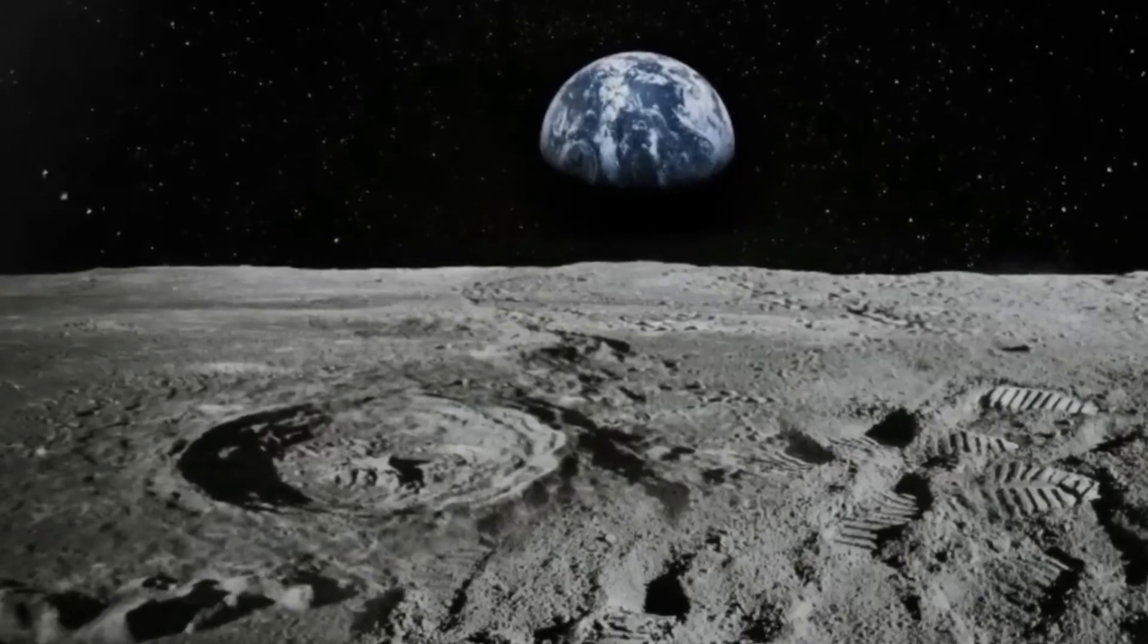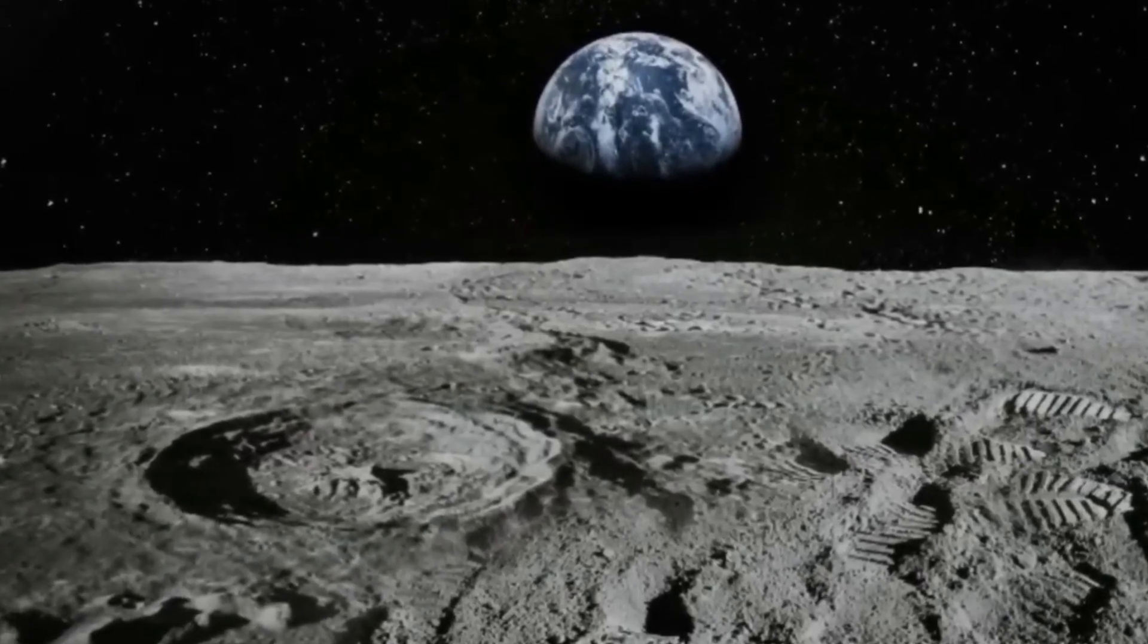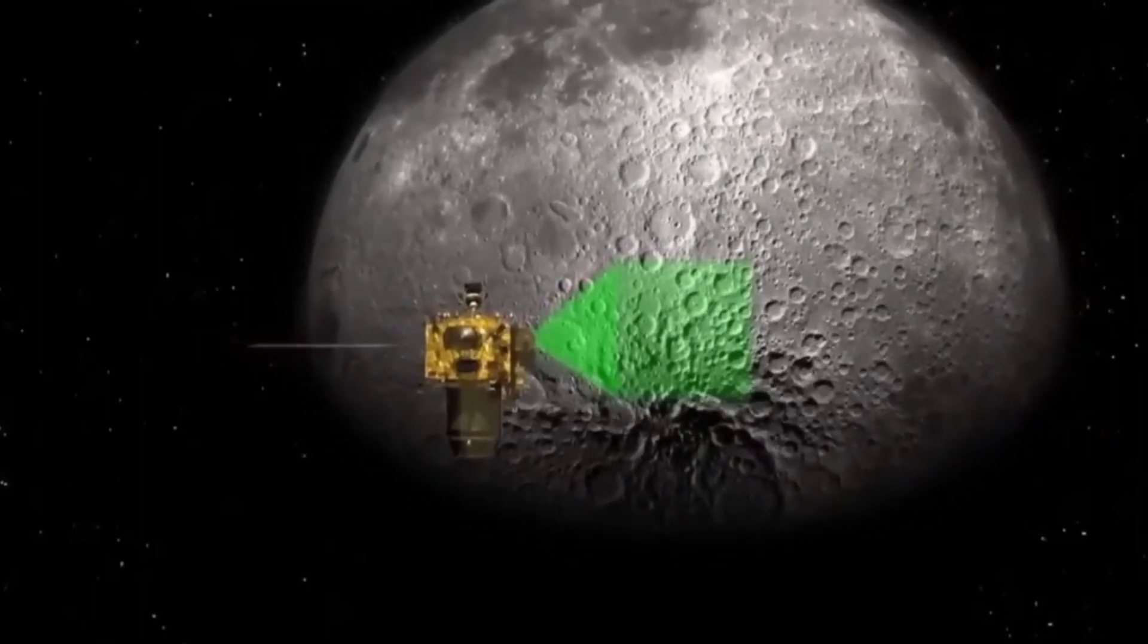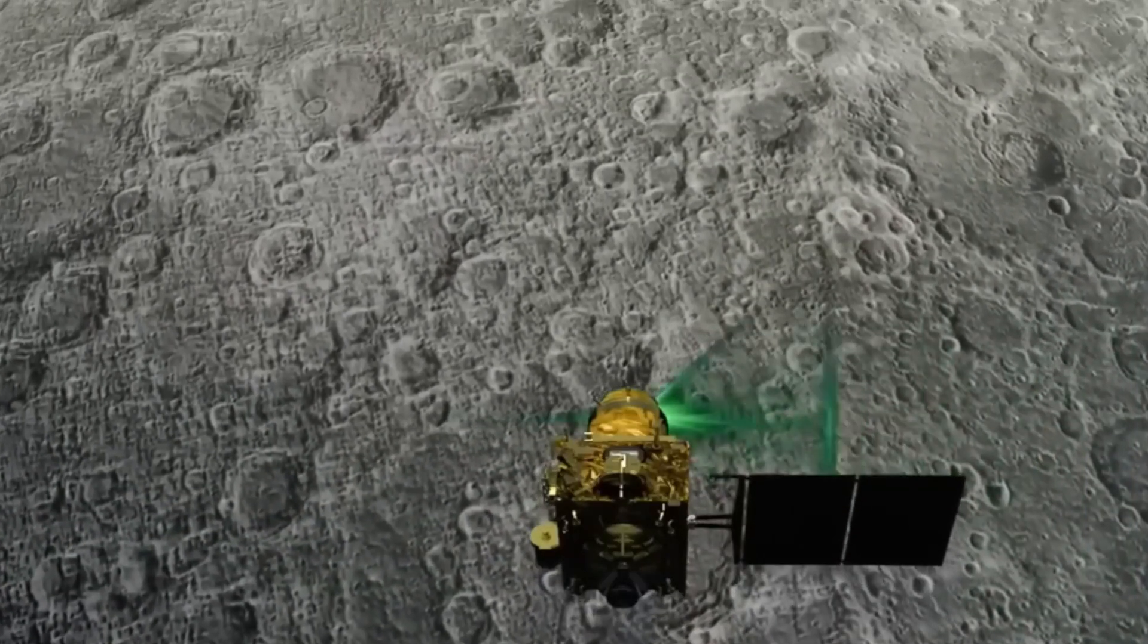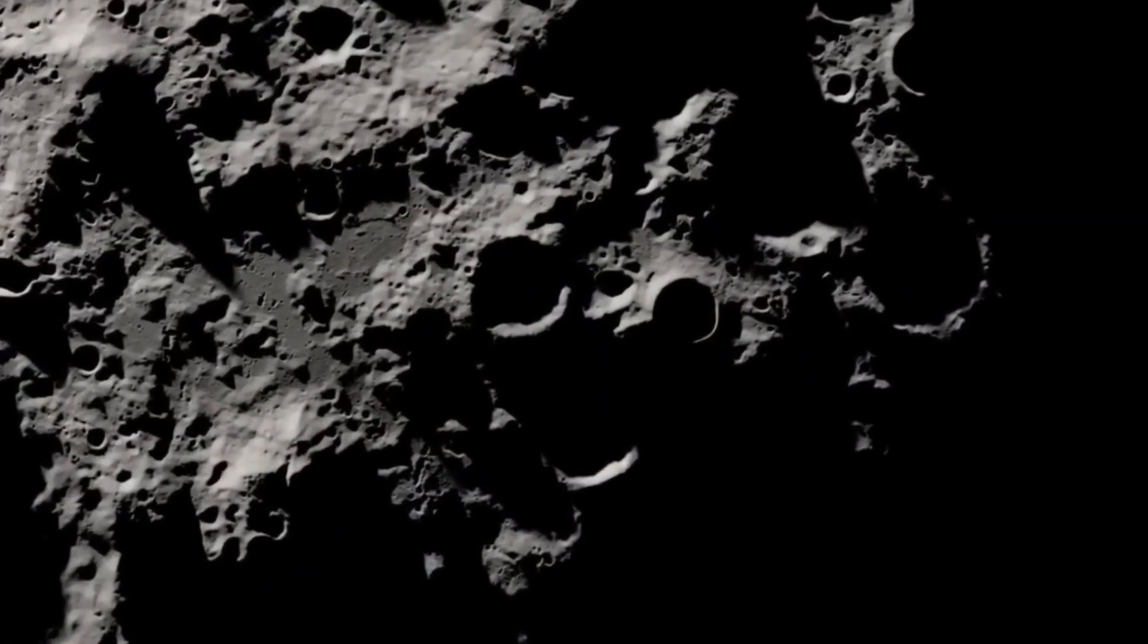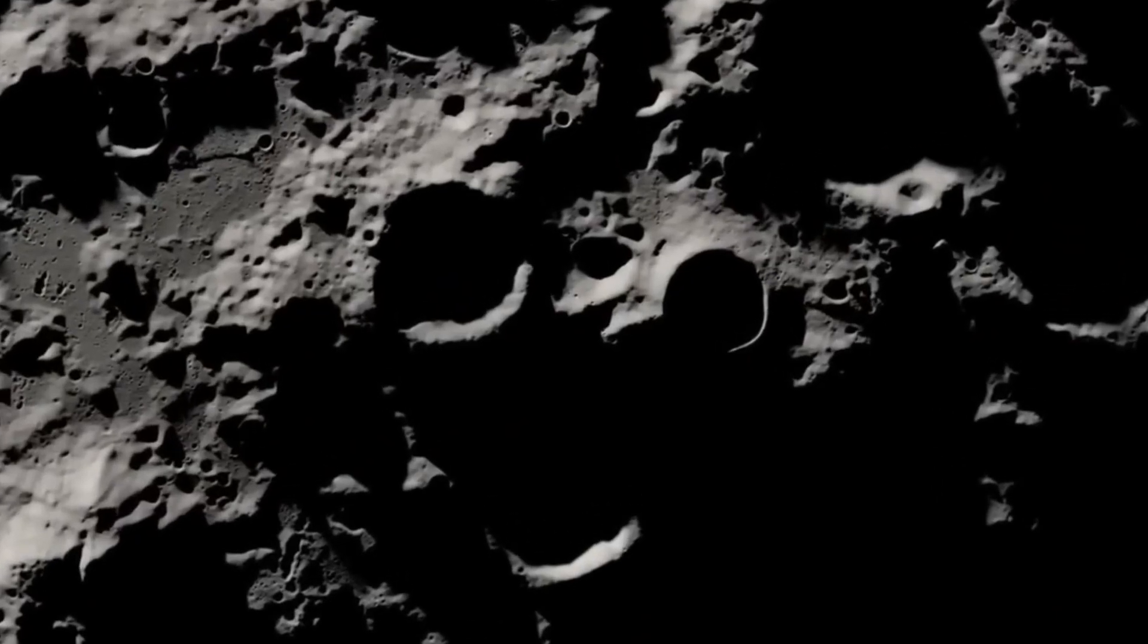Another challenge was the lack of a detailed map of the landing site. Unlike other regions of the moon that have been extensively mapped by previous missions, the south pole is relatively unexplored and unknown. Chandrayaan-3 had to use its radar and optical systems to identify obstacles such as craters, rocks, slopes, and shadows.